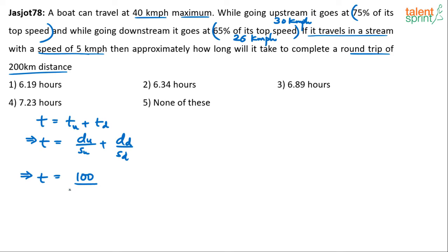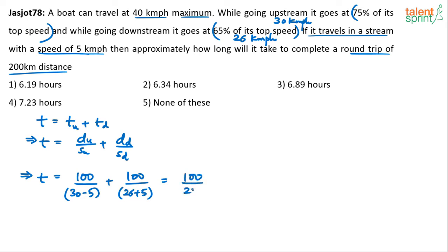When going upstream, speed is taken as the difference of speeds: 30 minus 5. For downstream time, distance is 100 again, and the speed is taken as the sum of speeds: 26 plus 5. Because when going downstream, the stream is in your favor, and when going upstream, you are going against the flow of the river, so speed reduces. So it should be 100 upon 25 plus 100 upon 31.